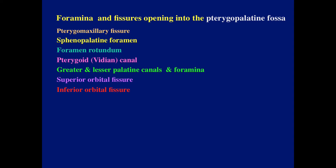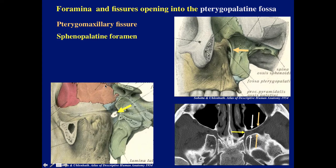The reason the pterygopalatine fossa is so important is because of all these foramina and fissures that open into it. We'll go through all of these: the pterygomaxillary fissure, the sphenopalatine foramen, foramen rotundum, the pterygoid or vidian canal, the greater and lesser palatine canals, the superior orbital fissure, and inferior orbital fissure. So again, the outer one is the pterygomaxillary fissure, and medially is the sphenopalatine foramen, which we can see outlined here on the CT.